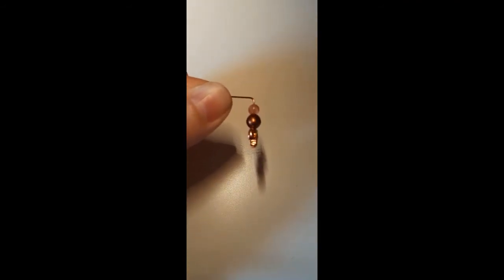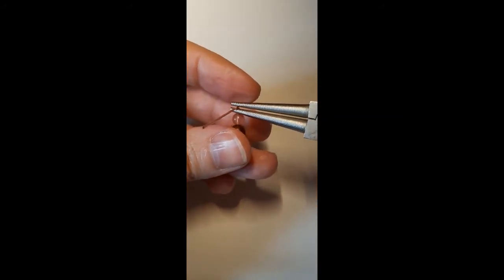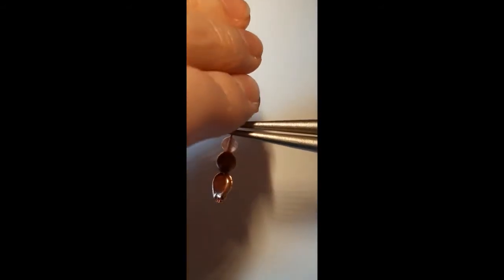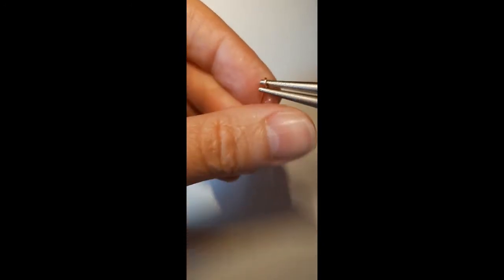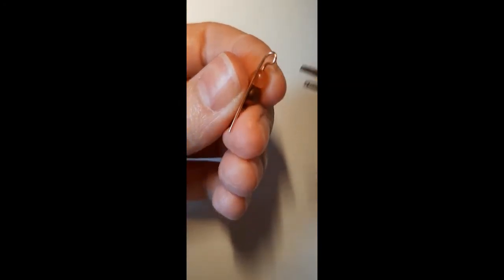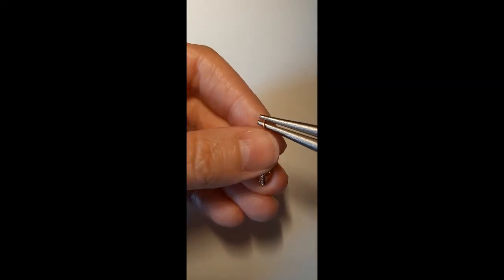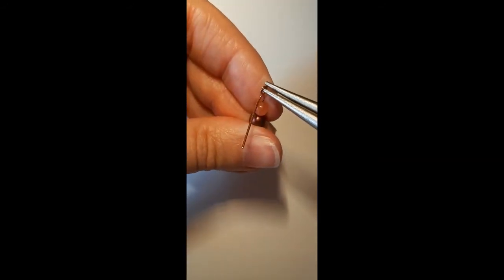Once you've done this, you take your round nose pliers and place the bottom of your plier, holding it like so, gripping the head pin in amongst the plier. Then you bend, pushing away from you, and bend the wire around. As you're bending, you can always take the head pin out of the loop and readjust it to however you feel comfortable.